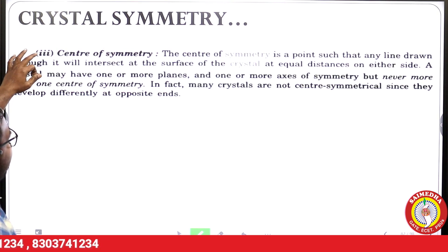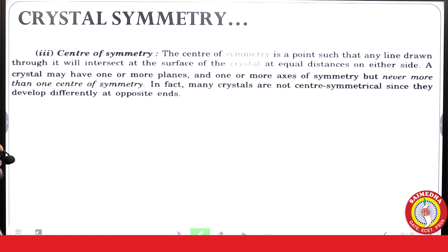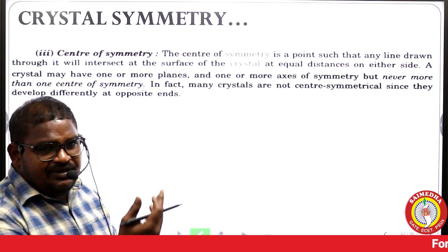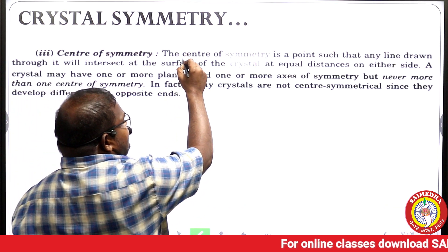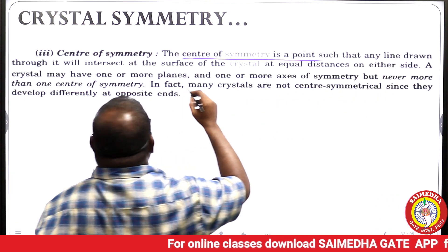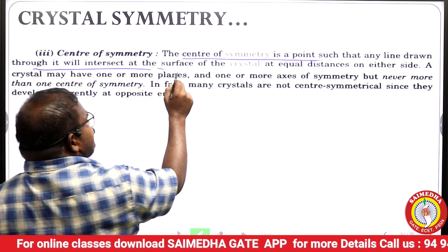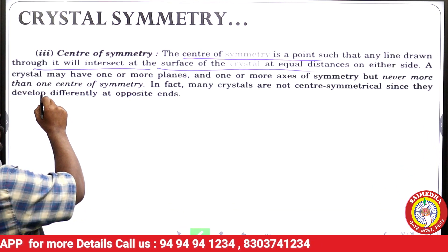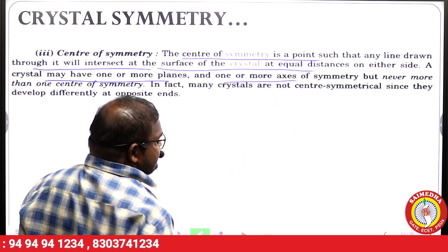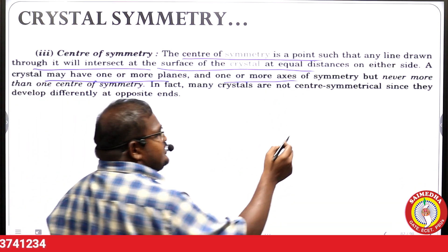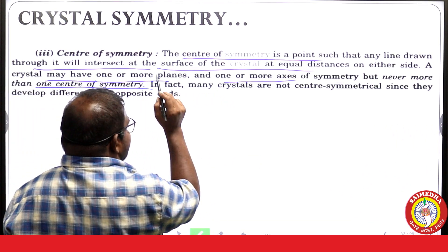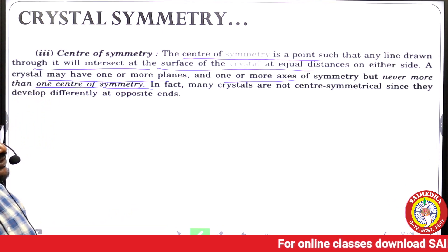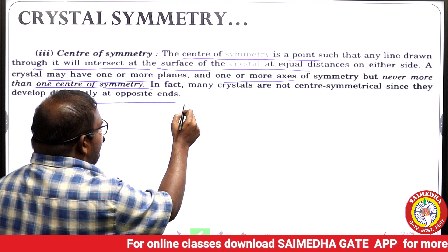The third fundamental symmetry element is center of symmetry. If we take one point, the crystal structure is symmetrical about that point. The center of symmetry is a point such that any line drawn through it will intersect the same surface of the crystal at equal distances on either side. A crystal may have one or more planes and one or more axes of symmetry, but never more than one center of symmetry. In fact, many crystals are not center-symmetrical since they develop differently at opposite ends.